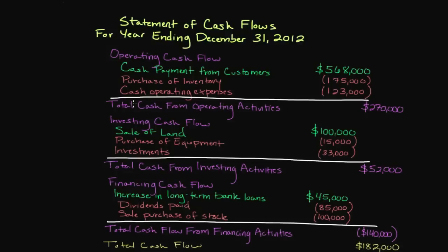Just like the income statement, the statement of cash flows looks at performance over a specific period of time — typically on a quarterly or annual basis. Contrary to the balance sheet, which looks at financial position at a specific point in time, we're looking at performance over a period of time. The statement of cash flows breaks things up into three areas: operating cash flow, investing cash flow, and financing cash flow.